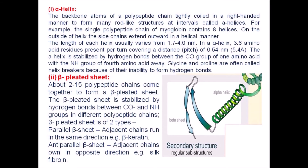In the alpha helix, the backbone atoms of a polypeptide chain tightly coil in a right-handed manner to form rod-like structures at intervals called alpha helices. For example, myoglobin contains eight helices.